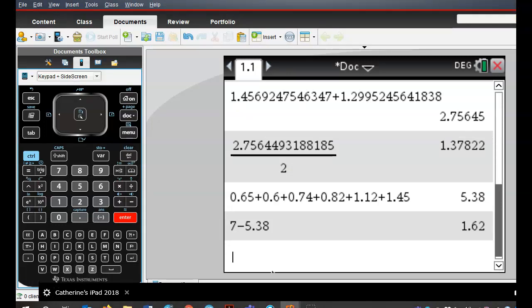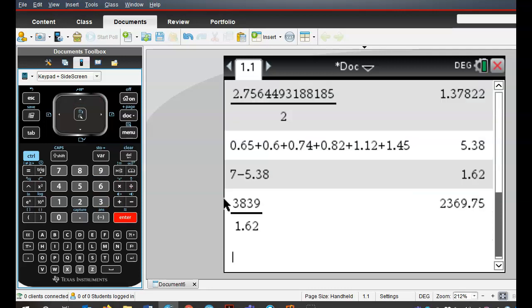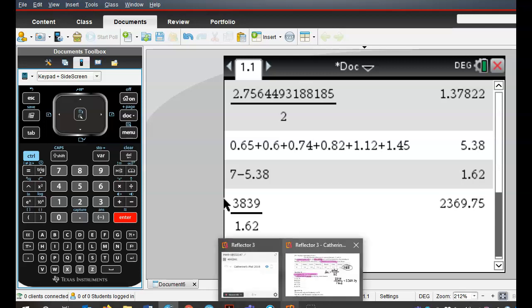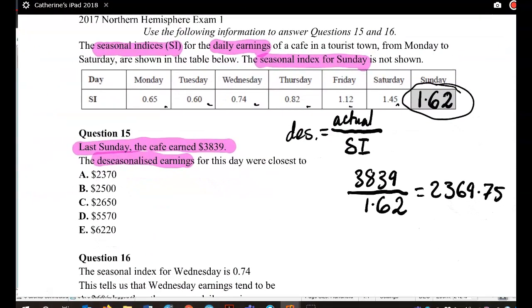So I'll do that, so 3,839 divided by our seasonal index. So that is 2,369.75, and so that means it is closest to 2,370, which is A.